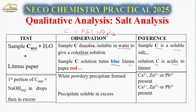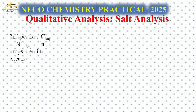First portion: add sodium hydroxide in drops. You're going to have a white gelatinous precipitate form. The likely cations are Ca²⁺, Zn²⁺, or Pb²⁺, because in excess, all of them are soluble in sodium hydroxide.